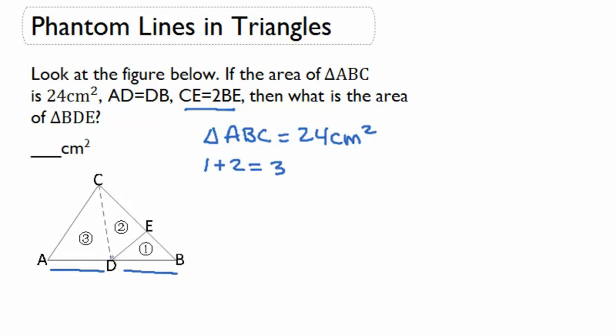If we were to break CED up into two parts, we would have three even sections for DBC. This means that triangle 1 is equal to one-third of triangle DBC.